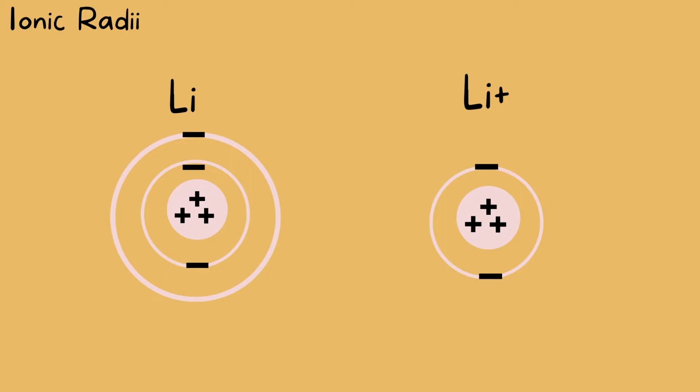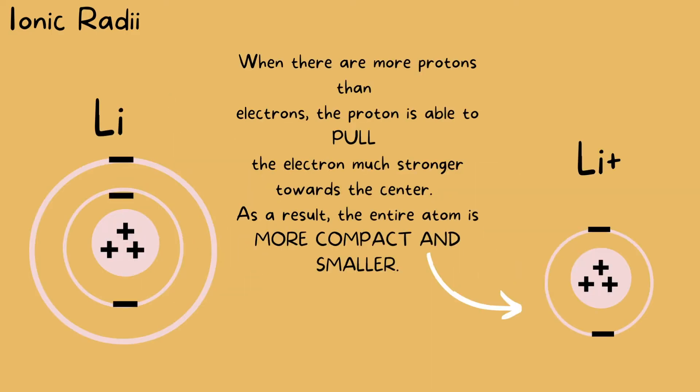You will automatically notice that the cation is smaller than its neutral form. That is because cations will always have more protons than electrons. This creates a much stronger energy pull coming from the protons, and they are able to pull the electrons closer to the nucleus.